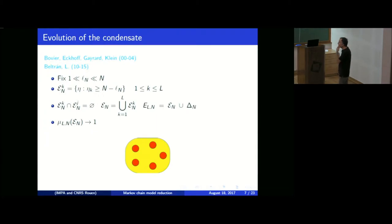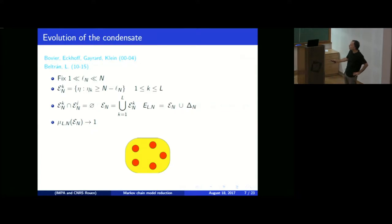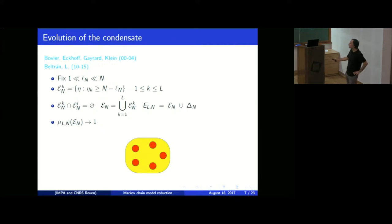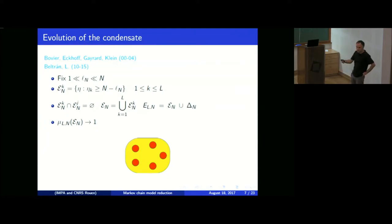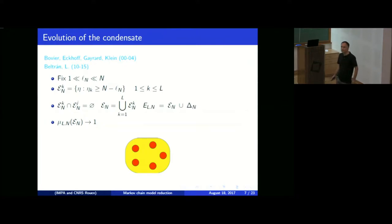I will concentrate on the second question: the evolution of the condensate. Let me introduce notation. If I fix a site K, I represent by E_K the configurations in which essentially all particles are at site K. These sets have no intersection. Let delta_N be everything remaining — configurations not in any of these sets. Since the stationary measure is concentrated on these configurations, if you start on one set you remain there for a very long time, then make a fast transition to another set.